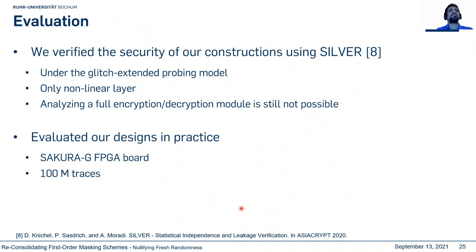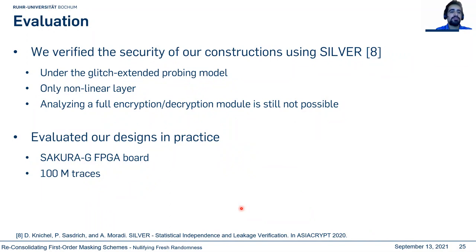We verified the security of all constructions using SILVER. All designs are secure under the Glitch Extended Probing model. Some are not jointly fully uniform, but for PRINCE and Midori we found jointly uniform solutions. Since SILVER can analyze full encryption, we performed practical analysis on Sakura FPGA, collecting 100 million traces. In none of them — including AES and PRINCE — did we observe any leakage.